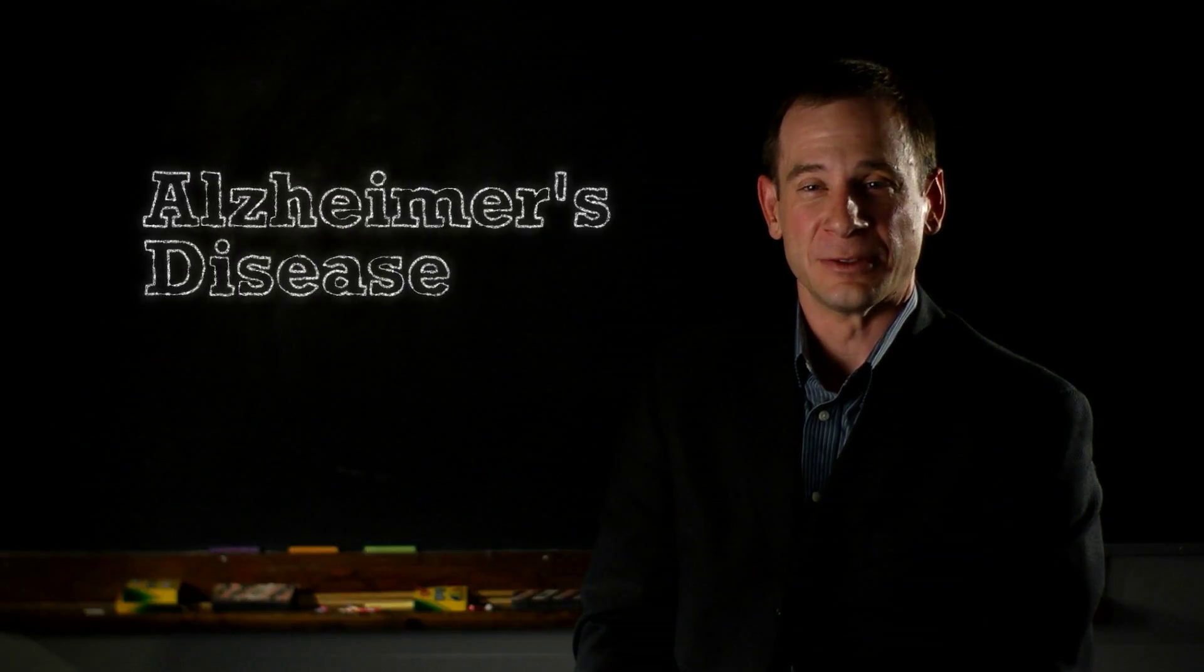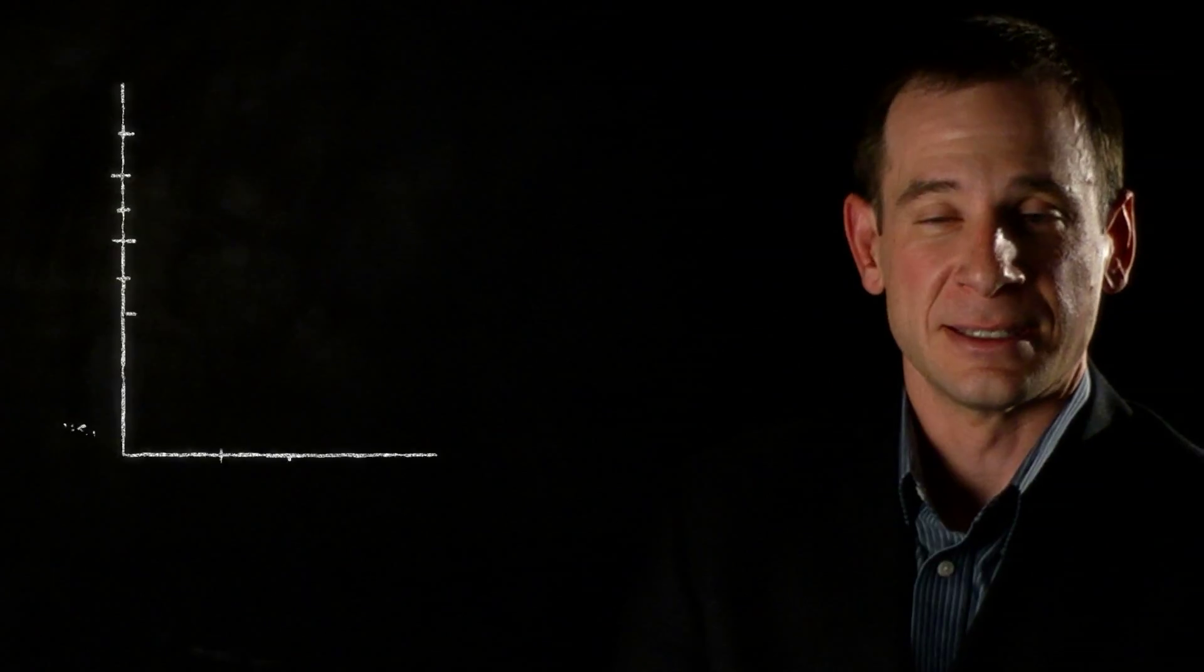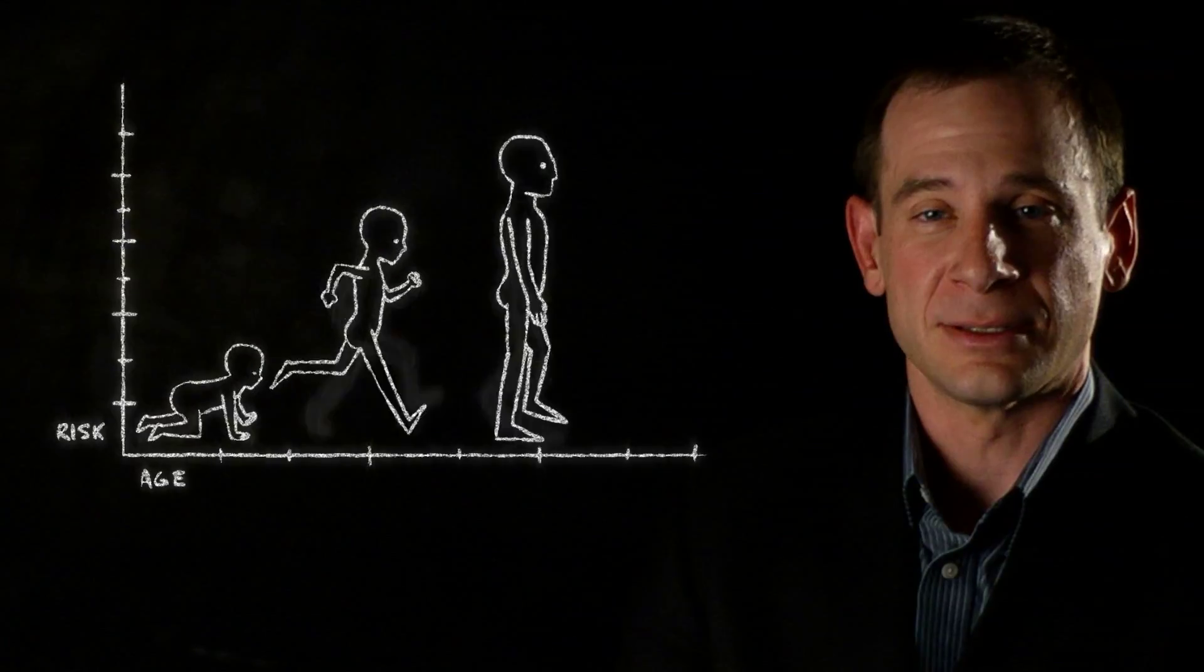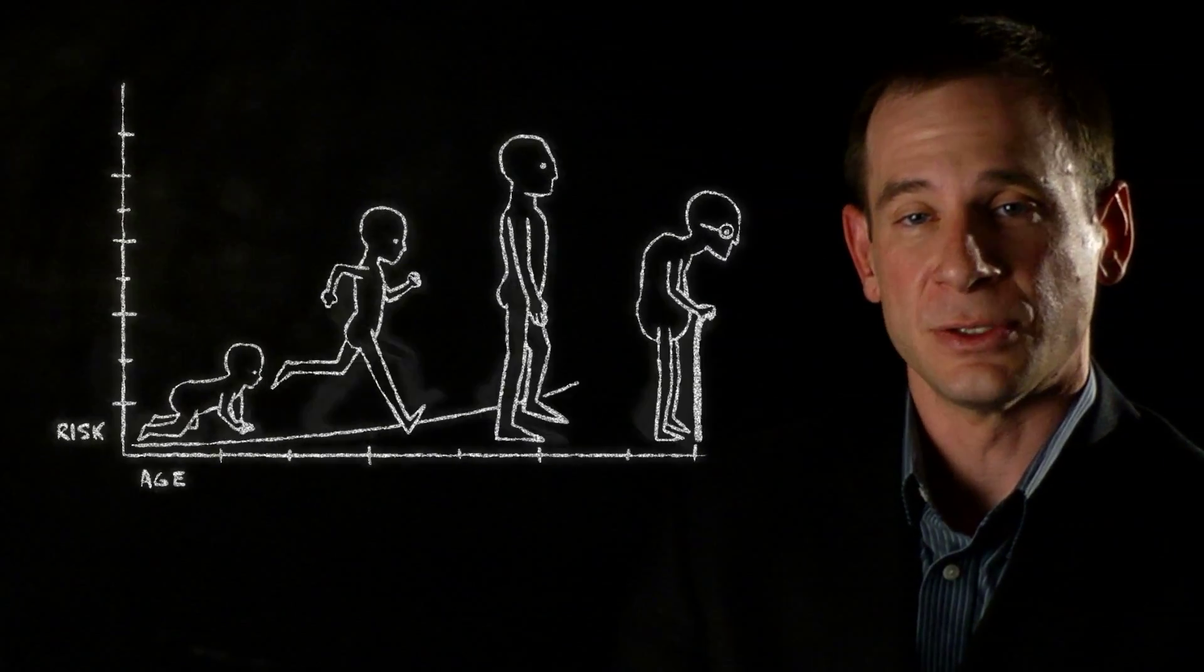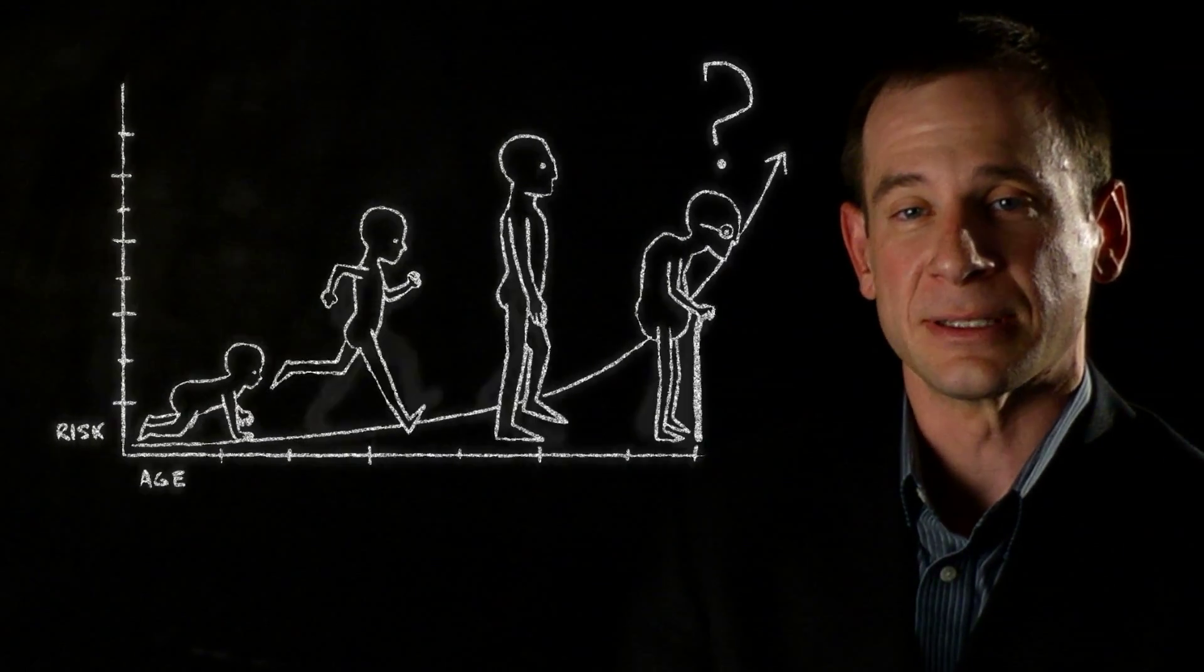Alzheimer's disease is a disease of the brain where the brain cells actually die. It's a disease that's strongest link is to age. So as you age, your risk for Alzheimer's disease increases.